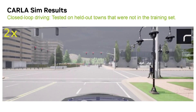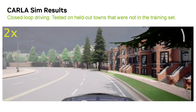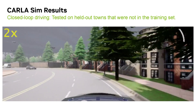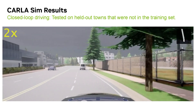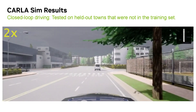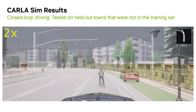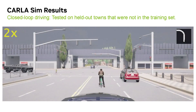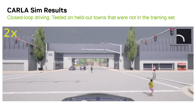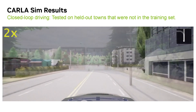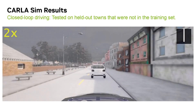The following videos show our model driving in closed-loop in the CARLA simulator, tested in towns that were not in the training set. The training data was collected in CARLA sim using a privileged agent roach, similar to the mild paper. We see complex behavior where the agent stops for red lights, yields to pedestrians crossing the street, and stops for stop signs.